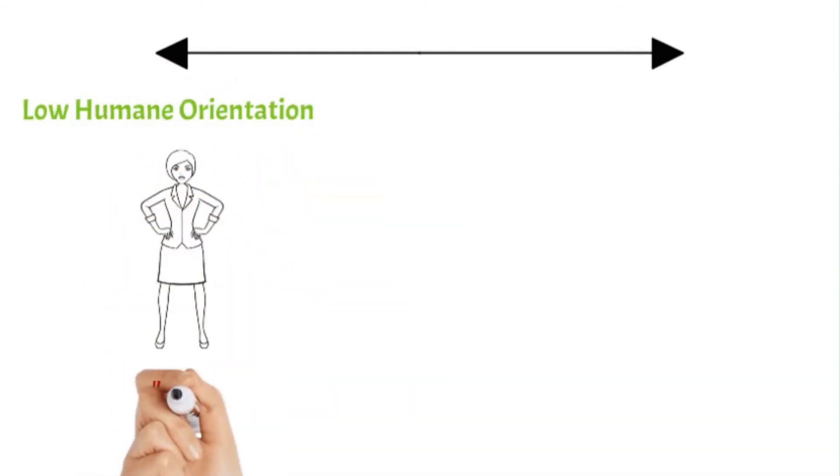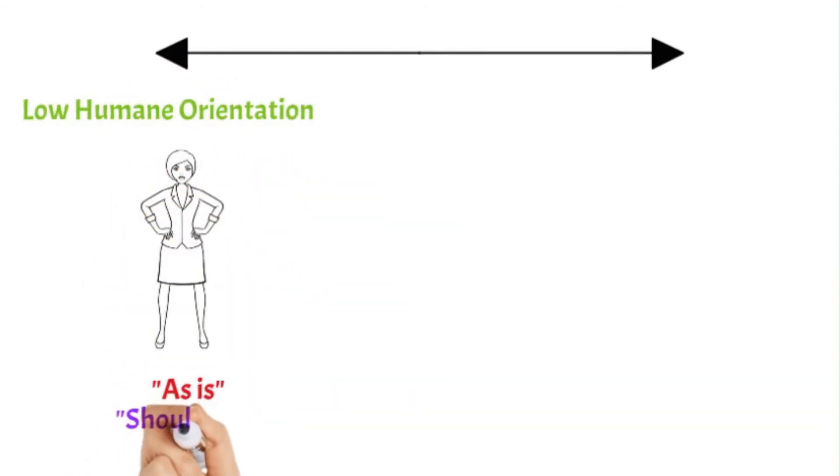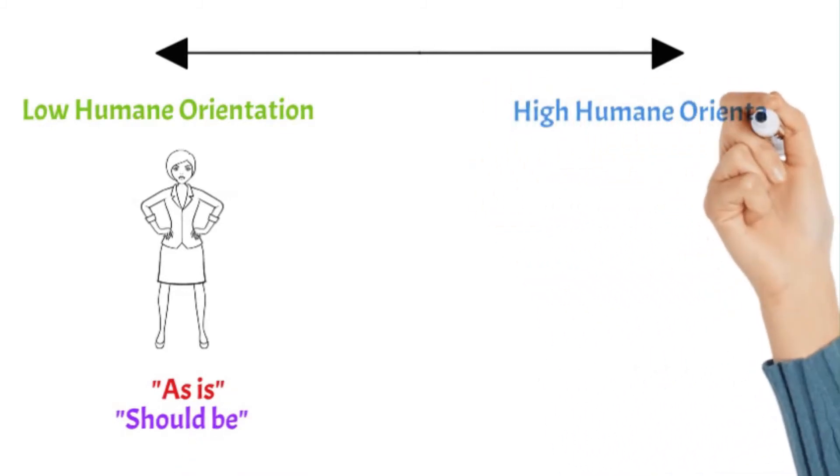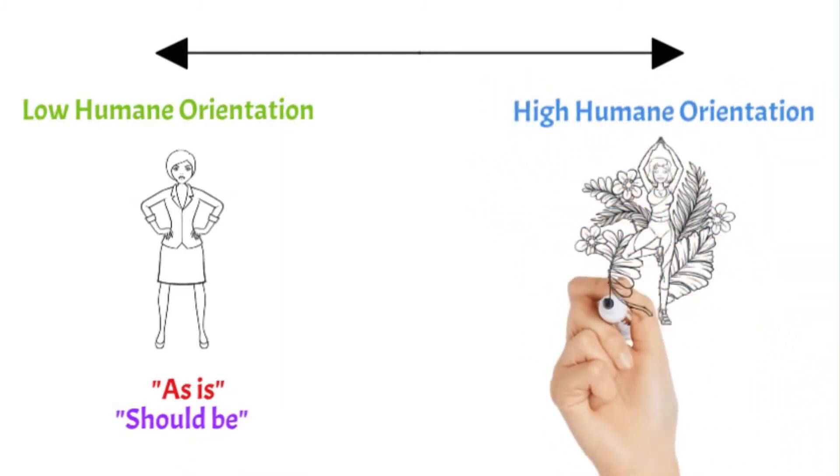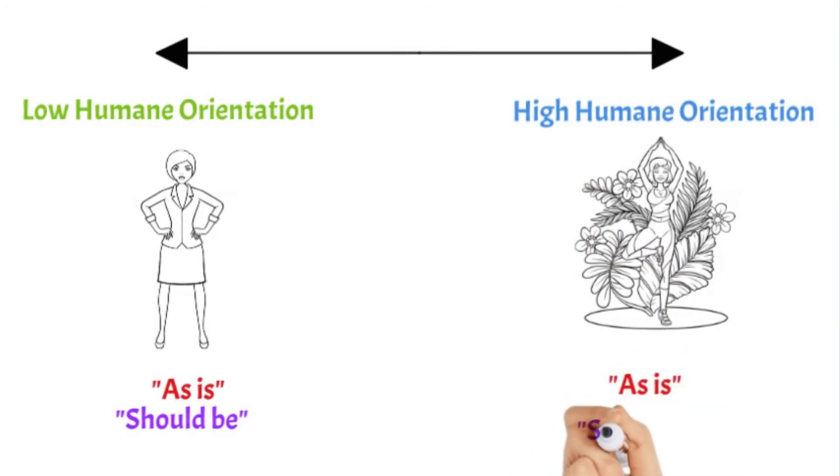Humane orientation is the degree to which a collective encourages and regards, and should encourage and regard, individuals for being fair, altruistic, generous, caring, and kind to others.